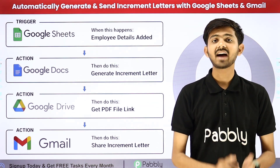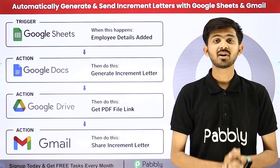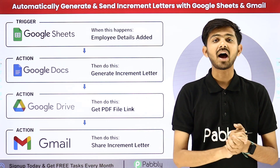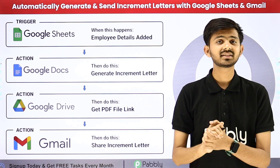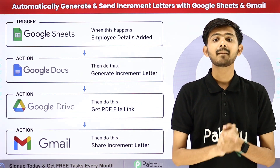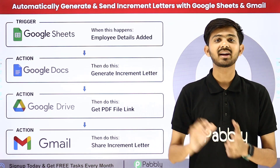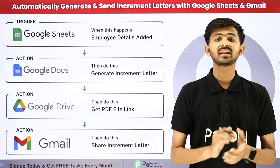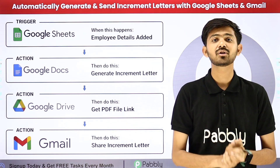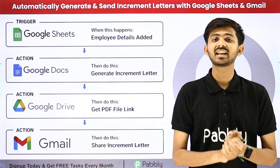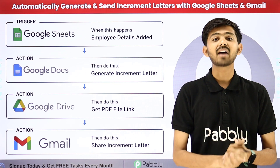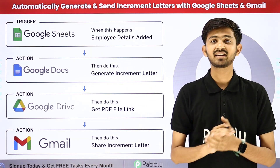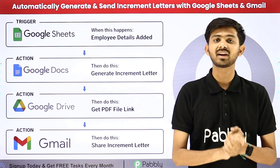For that, I have to create a database in my Google Sheet where I'll add the details of all the employees who are going to get the increment. After adding these details, I'll use them to generate an increment letter using a template I've created in my Google Docs account. After generating this increment letter, I'll make it shareable using Google Drive and get the PDF link of that document. Then I'll send this increment letter as an attachment via email to all my employees.